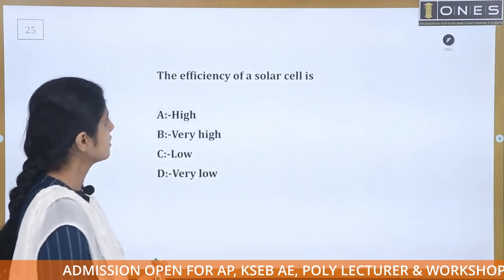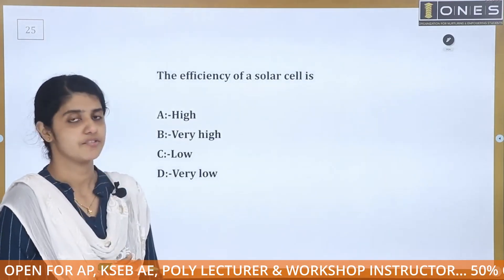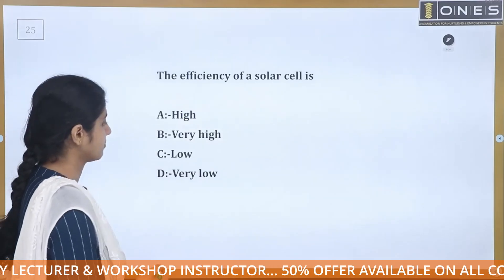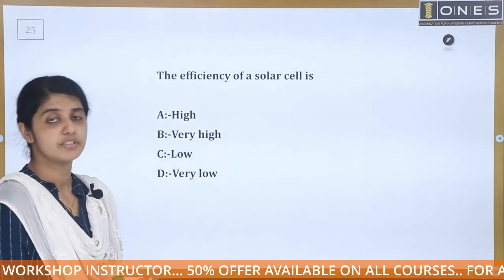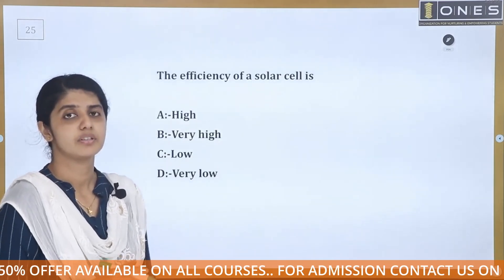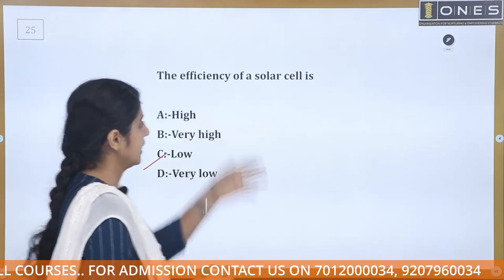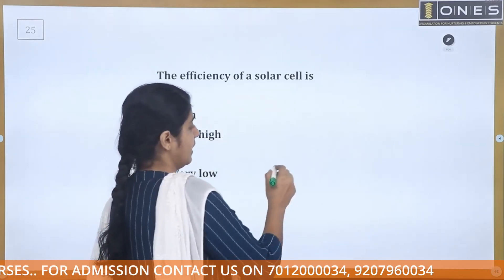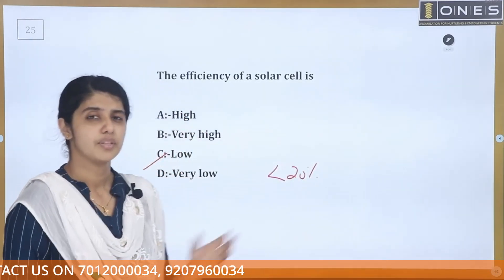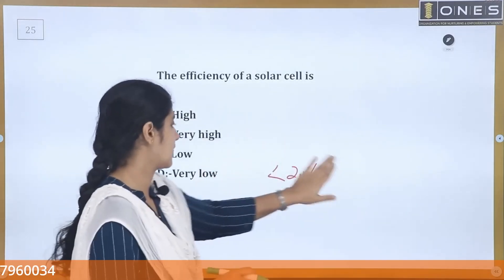The efficiency of a solar cell is low — very low. The solar cell has a low efficiency value of less than 20%. Usually, solar cells operate in the 15% efficiency range.